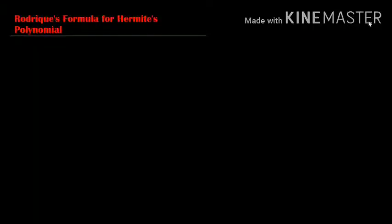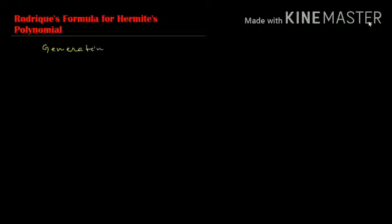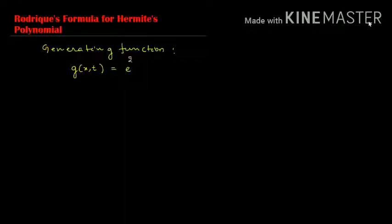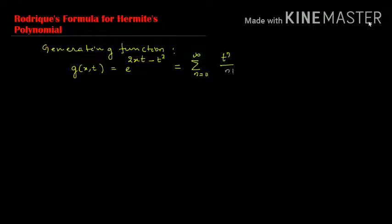Today we will discuss Rodrigues' formula for Hermite polynomials. We know the generating function for Hermite polynomials. The generating function is g(x,t) = e^(2xt - t²), which equals the summation from n=0 to infinity of t^n divided by n! multiplied by Hn(x).